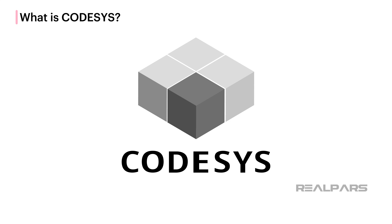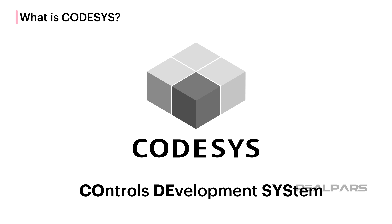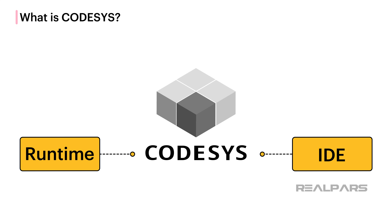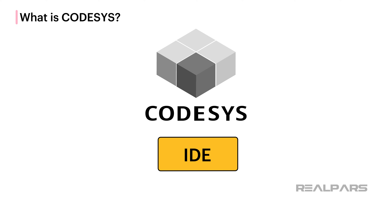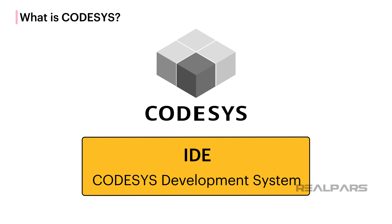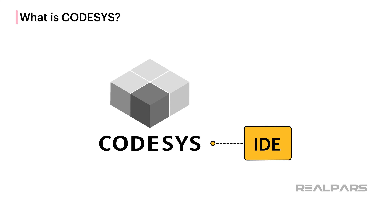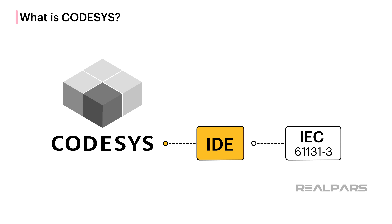When people talk about Codesys, which is short for Controls Development System, they are really talking about two related pieces of software. The first piece of software is an integrated development environment, known as the Codesys Development System. Programmers and controls engineers can use the Codesys Development System to write control applications using the IEC 61131-3 programming languages, and to create visualizations for those control applications.